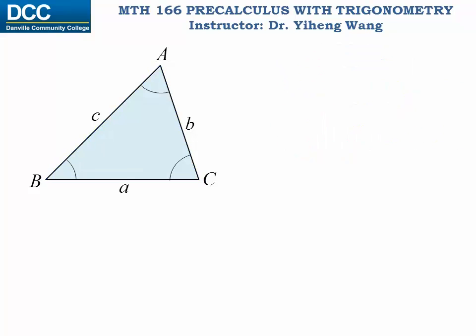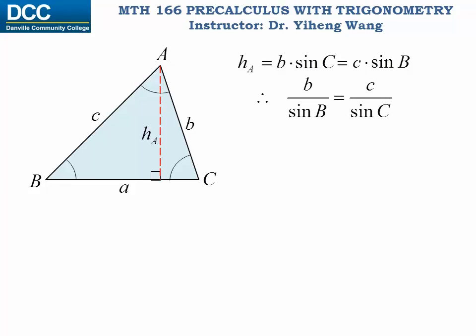Let's first look at how the law of sines is derived. For this triangle, let's draw a height from point A to the base side a. Based on what we've learned in trigonometry, we know that the length of this height HA equals b times sine C. But at the same time, HA also equals c times sine B. From this equation, we can derive that side b over sine of angle B equals side c over sine of angle C.